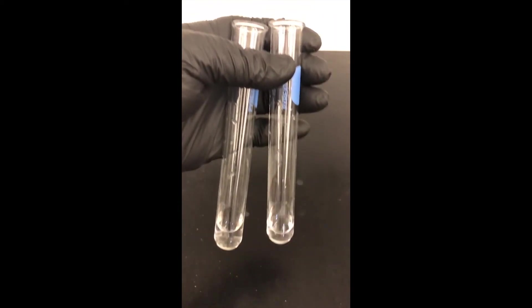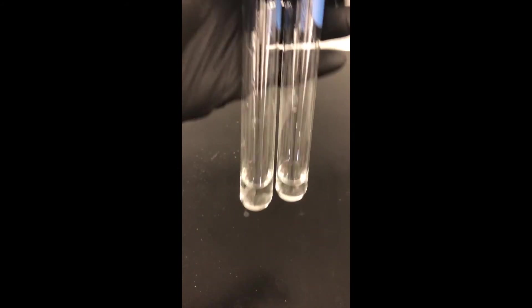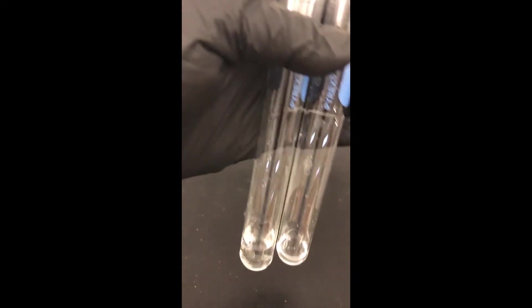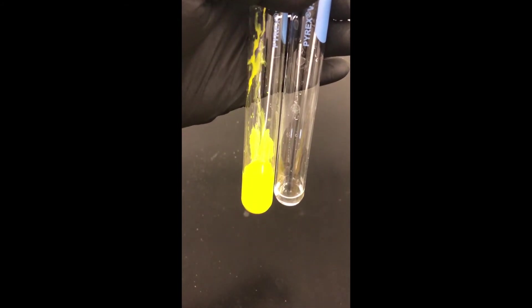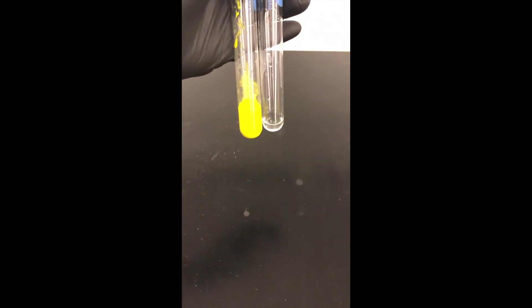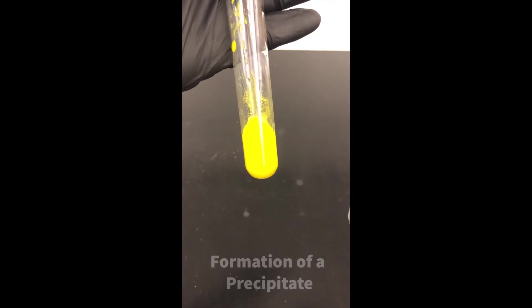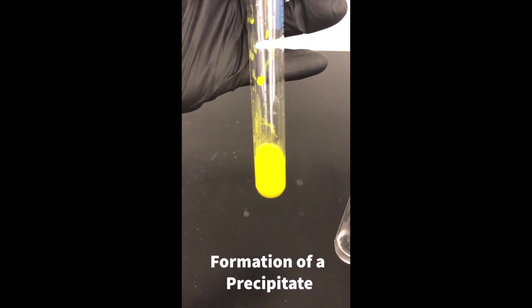Here again I have two test tubes, each with liquid in them, colorless. Again, I would expect that if I combine them I should have no observable change. Let's see what happens. Whoops! I'm getting not only a color change, but if we observe carefully, particularly the sides of this test tube that I'm holding here